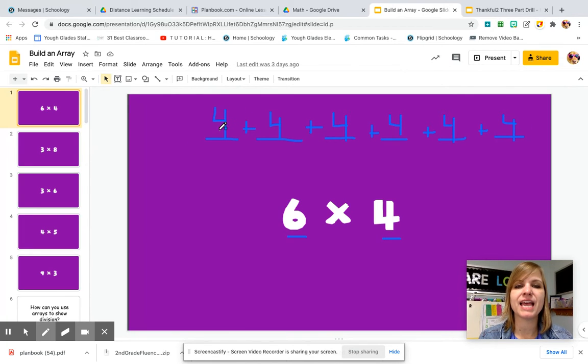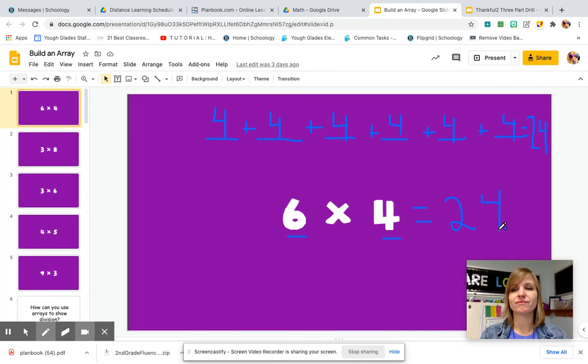So I could say four plus four is eight. Plus four more is 12. Plus four more is 16. Plus four more is 20. And plus four more is 24. That equals 24. If that is six times four. Let's do that one more time.